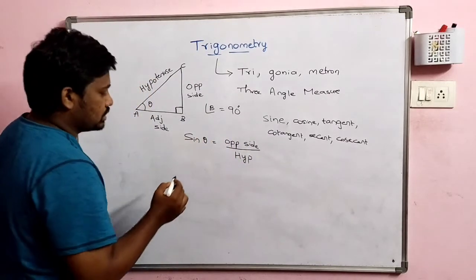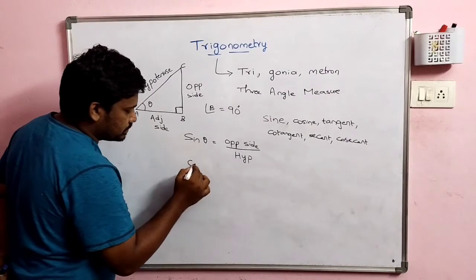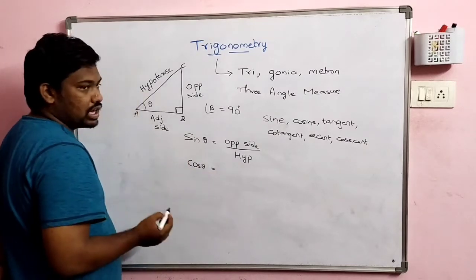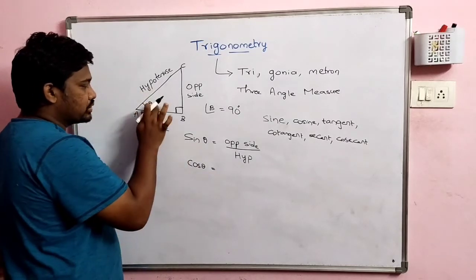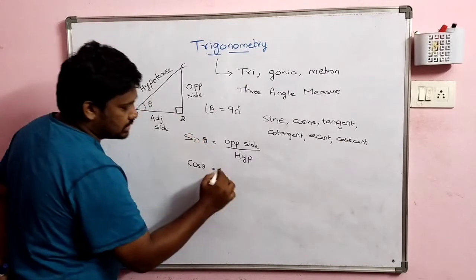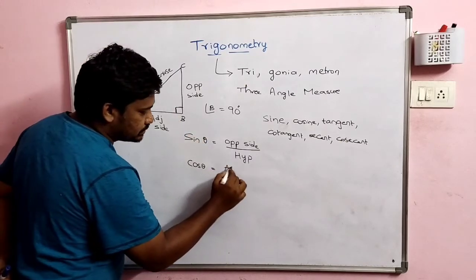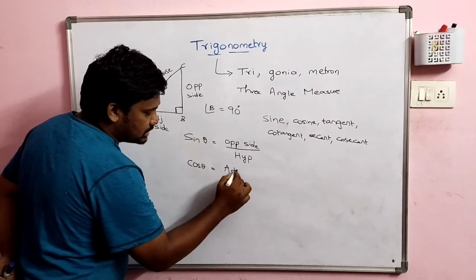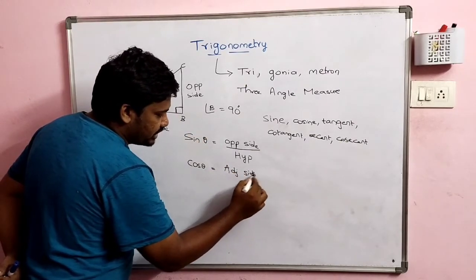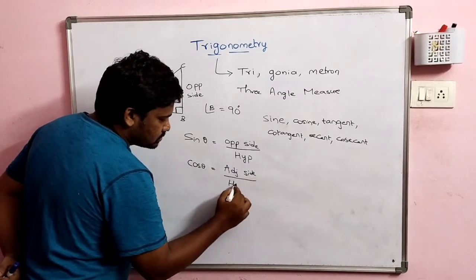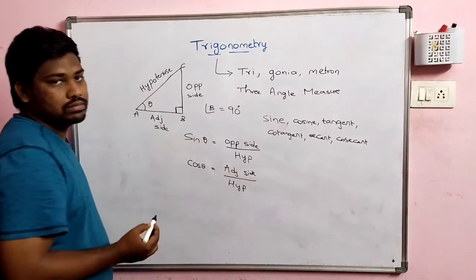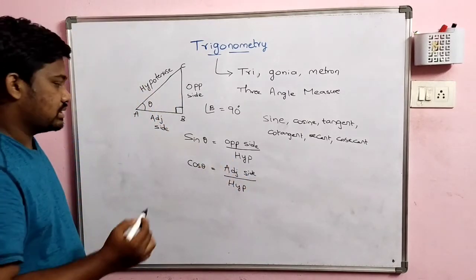Next, cos theta. Cosine theta is represented as cos θ. Cos theta equals adjacent side divided by hypotenuse. So, cos θ = adjacent side / hypotenuse.